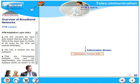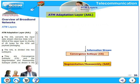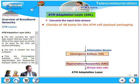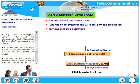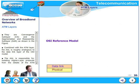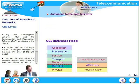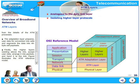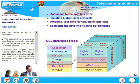Let us look at the ATM adaptation layer AAL. The AAL converts the input data stream of the upper layer into chunks of 48 bytes for ATM cell payload packaging. The AAL is divided into two sublayers: the convergence sublayer CS and the segmentation and reassembly sublayer SAR. Combined with the ATM layer, the AAL is roughly analogous to the data link layer of the OSI model. The AAL is responsible for isolating higher layer protocols from the details of ATM processes. The adaptation layer prepares user data for conversion into cells and segments the data into 48-byte cell payloads. The higher layers residing above the AAL accept user data, arrange it into packets, and hand it to the AAL.